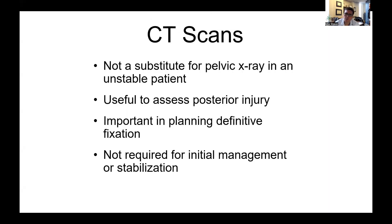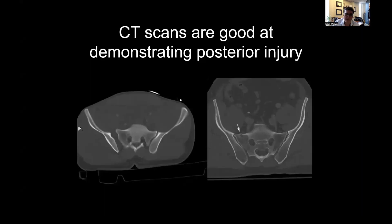CT scans are incredibly useful to really define the anatomy of a pelvic injury, but you don't need them for the initial treatment. If you can get one in a stable patient, they're obviously helpful. They're certainly useful for guiding sacral fixation, so I always get a CT scan before going to the OR if I can, but you don't have to have it for that first initial treatment. They're really good at defining the posterior injury, which is the hardest thing to see on plain films. The axial cuts can show you either a complete disruption of the right sacroiliac joint — something like an APC3 injury — or a zone one fracture of the sacrum, compatible with a lateral compression injury.